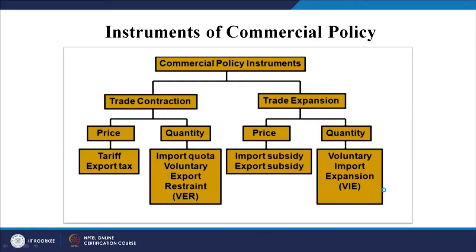What are the instruments involved in commercial policies? There are two ways of understanding them: trade contraction and trade expansion mechanisms. Trade contraction means when the trade is contracting — there is a fall, a slowdown, a recession. Trade expansion means where there is a boom in the market, where there is growth.